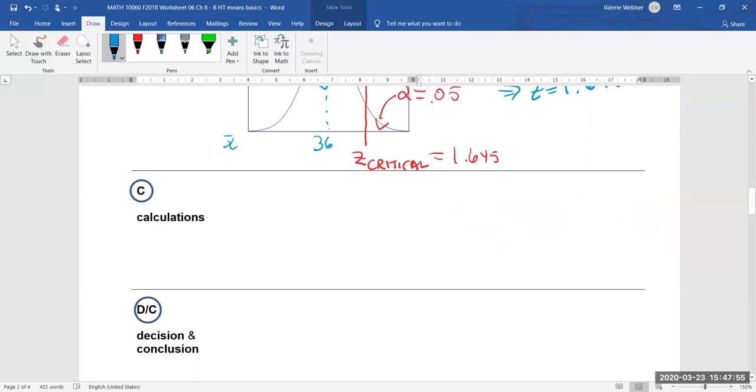So remember we have our zed calculated and that's equal to x bar minus mu divided by sigma over root n. So let's put in the numbers there. My x bar is 36.8 that's my sample mean.